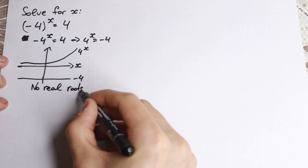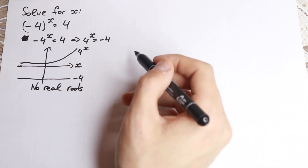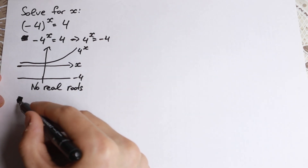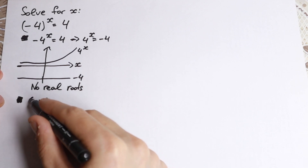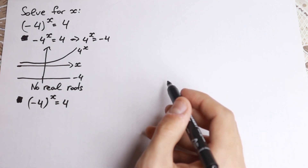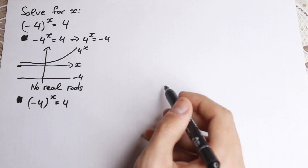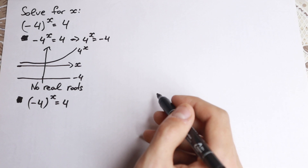In our actual case we do have parentheses, so we need to work with them. This is our main case: (-4) to the power x equal to 4. A lot of students ask me — this is not a real root, because a negative number raised to some power cannot equal a positive number. And I ask them: how can we prove that right here we don't have any roots?